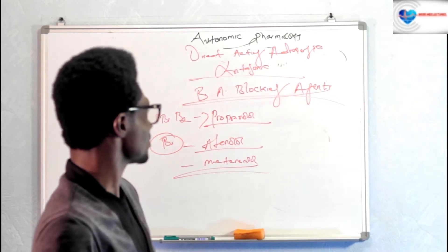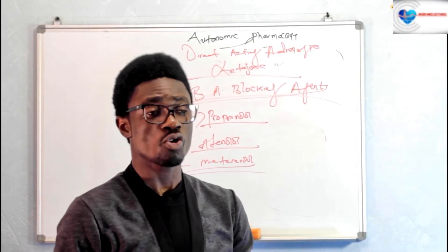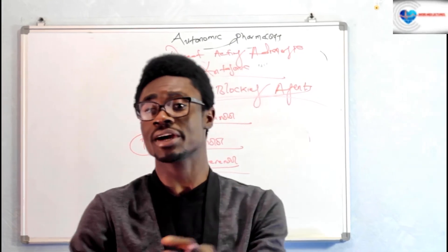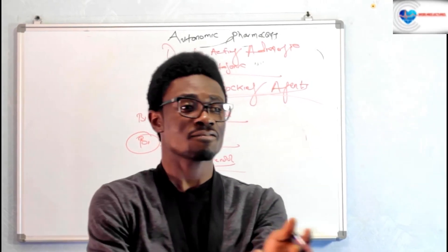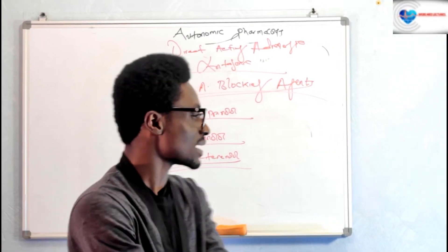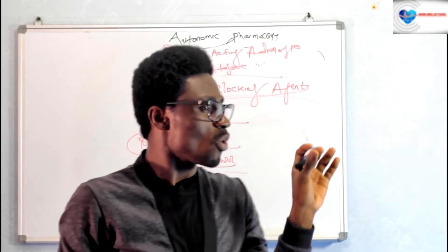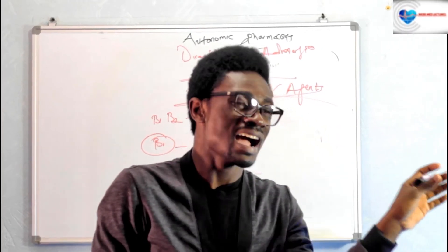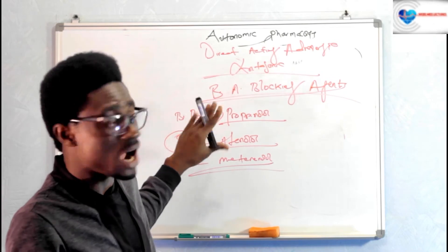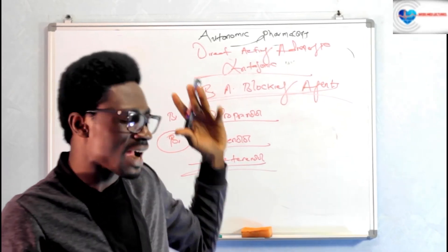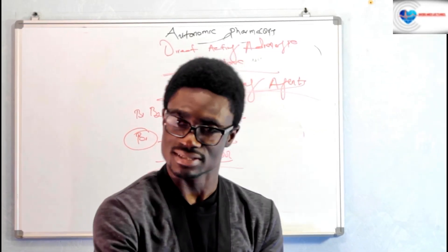Having understood the adrenergic antagonists, we can see that pharmacological agents acting antagonistically towards the sympathetic nervous system include sympatholytics — those acting presynaptically on the presynaptic membrane — and direct-acting adrenergic antagonists that act on receptors. We've just finished discussing the direct-acting adrenergic antagonists.